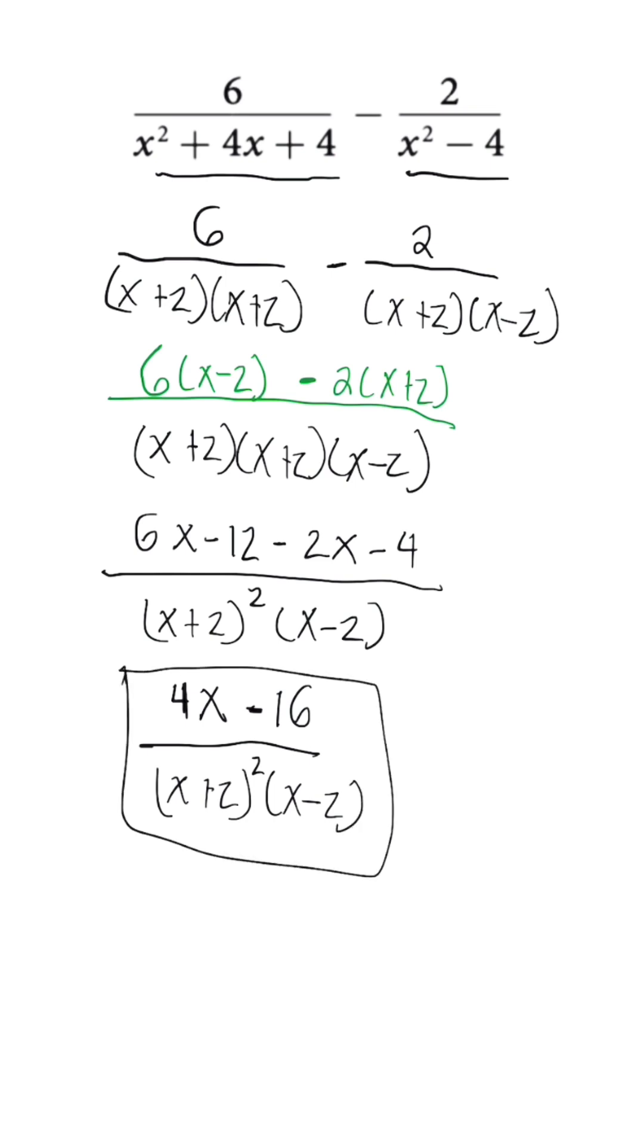But you have to be mindful that they may have an answer where they simplified the numerator by taking out a GCF of 4. So you could possibly see 4 times x minus 4 all over that x plus 2 squared times x minus 2.